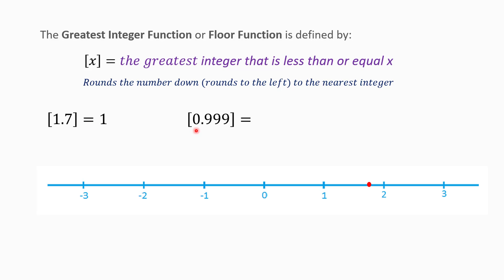Another example: what is the greatest integer of 0.999? It is very very close to 1, between 0 and 1, but note that this function always runs your number down to the nearest integer — it always rounds to the left on a number line. So if we run 0.999 down to the nearest integer less than this value, we get 0. The greatest integer of 0.999 is equal to 0.